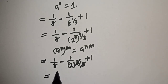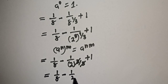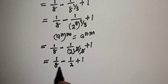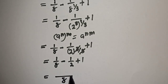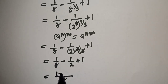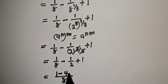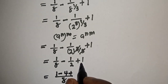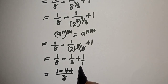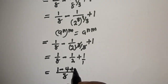So we have 1 over 8, minus 1 over 2, plus 1. Now let's find the common denominator. The LCD is 8. That gives us: 1 over 8, minus 4 over 8, plus 8 over 8.